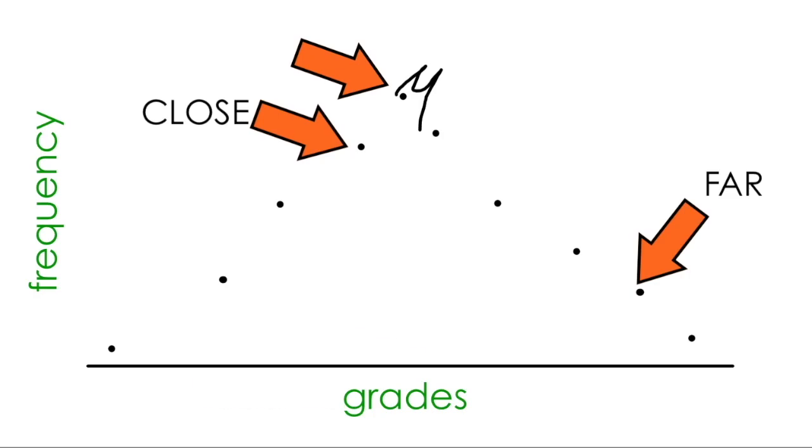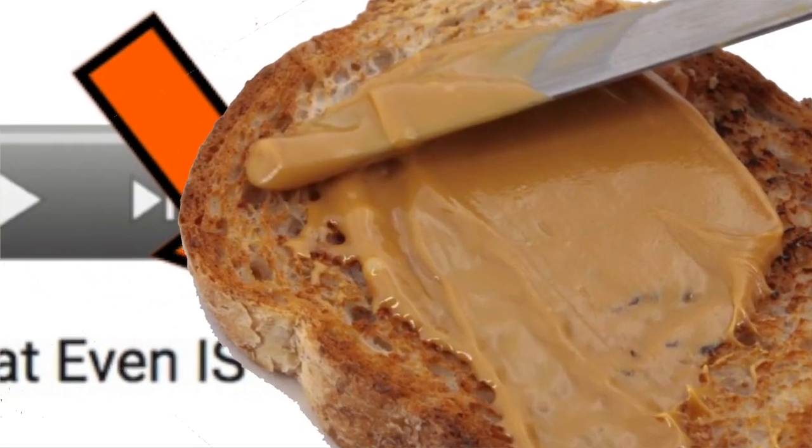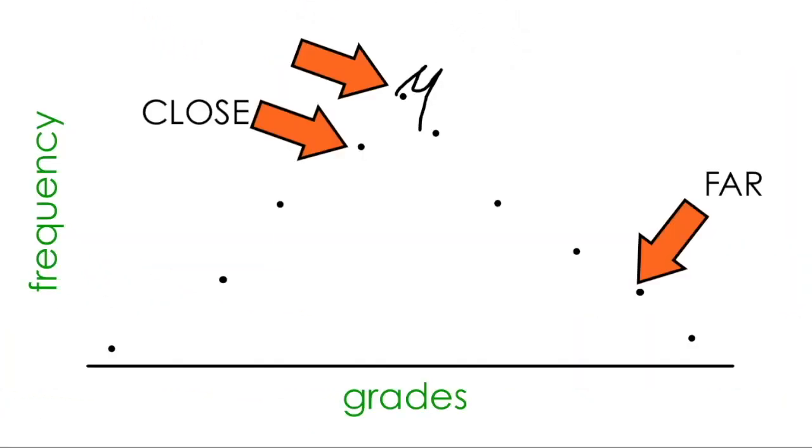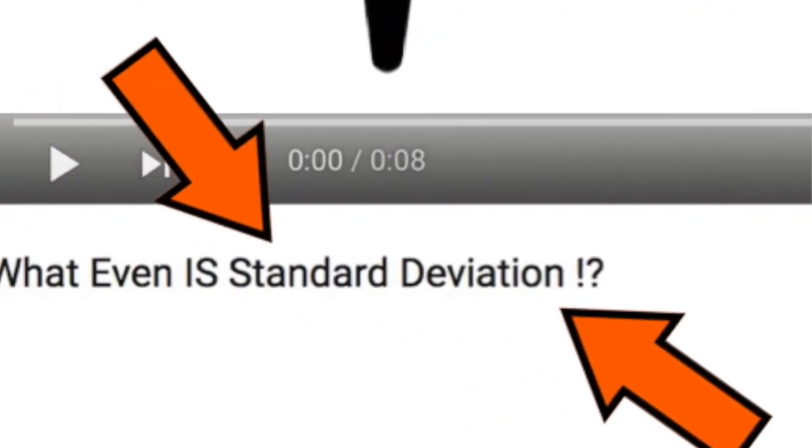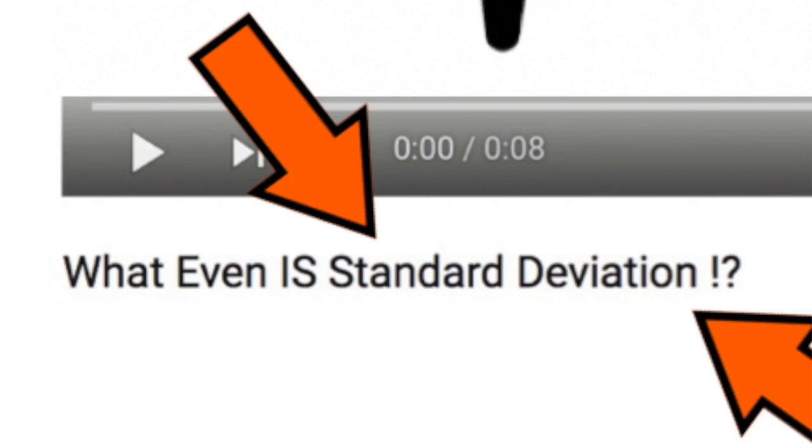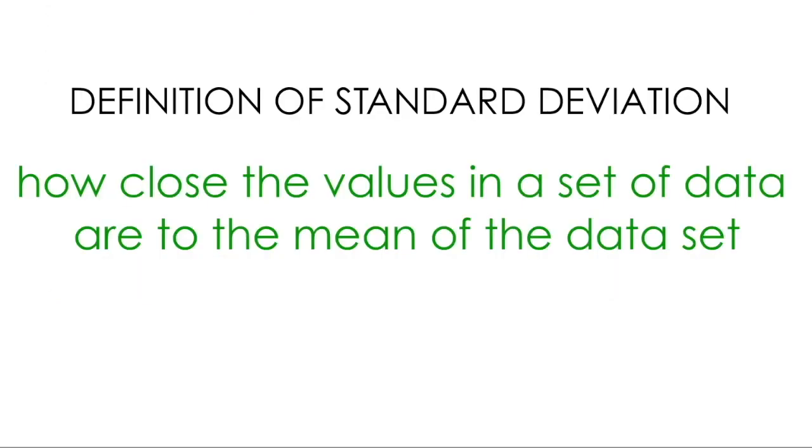But wouldn't it be nice if we had some standard measure of the spread of the data so that we could communicate just how far away these points deviate from the mean? Oh, look at that. The standard deviation of a data set allows you to determine how close the values in a data set are to the mean of the data.